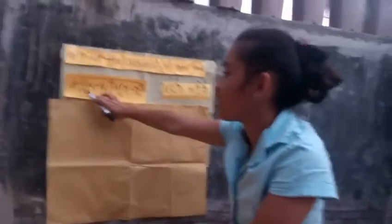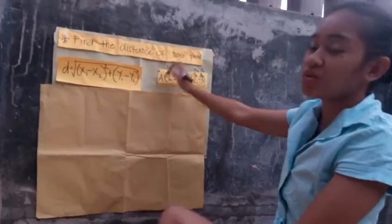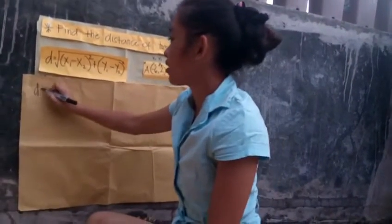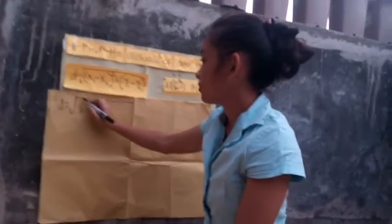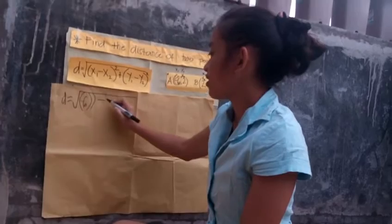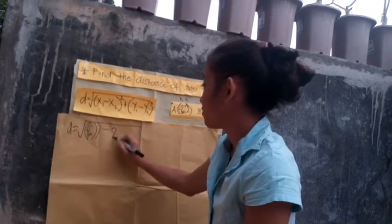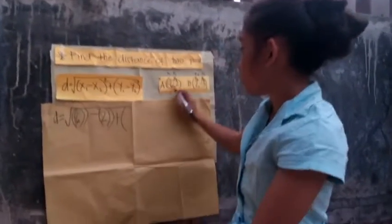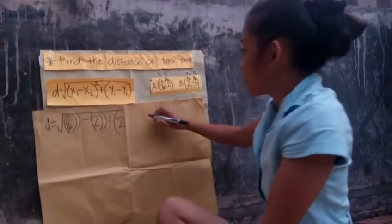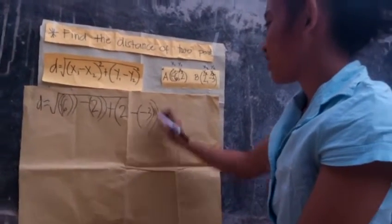This is the formula again: d equals the square root of (x₁ minus x₂) squared plus (y₁ minus y₂) squared. So d equals the square root of (negative 6 minus 2) squared plus (2 minus negative 3) squared.